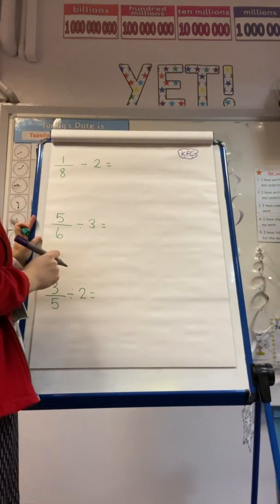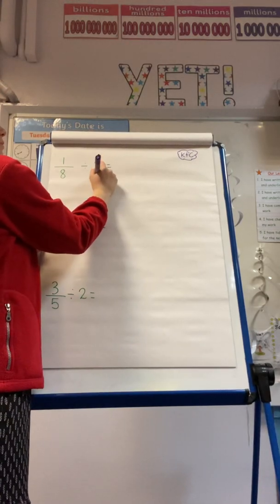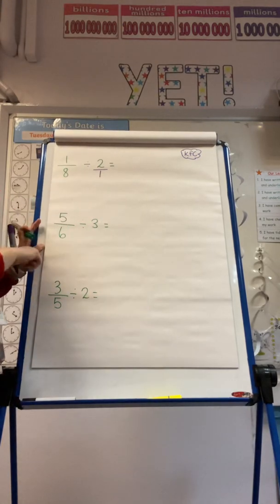So the first thing I'm going to do, just like we're multiplying a fraction, is I'm going to change my integer so that it's now a fraction. We always give it a denominator of 1.